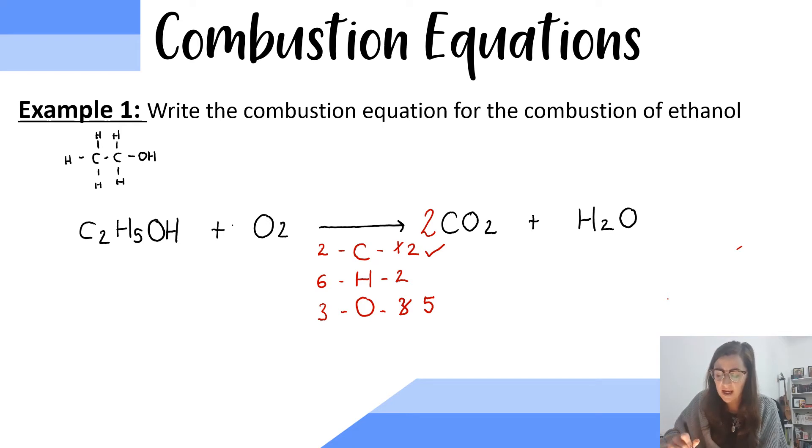The next thing I'm going to balance is my hydrogens. I have six on the left and two on the right. So, I need to put a three here. So, now I have six hydrogens and my hydrogens are balanced, but that again changes my oxygen. So, I now have four oxygens plus the three in water is seven. So, in order to balance my oxygens on the left, because I have seven on the right and three on the left, I want to put a three in front of my O2, which will make six, plus the one which is in the ethanol makes seven. So, this is now my completed combustion equation for the combustion of ethanol.